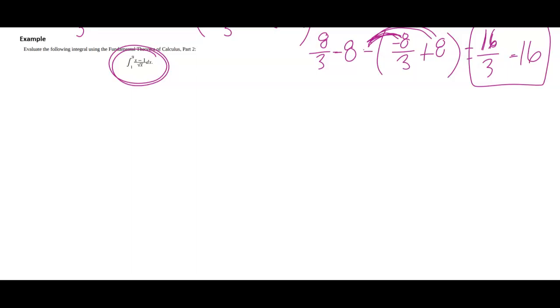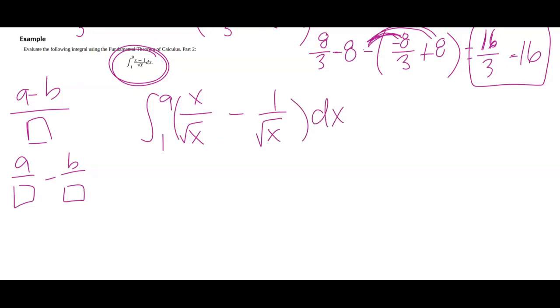But I noticed that I have a polynomial, x minus 1, a linear function which is a polynomial, over the square root of x. And anytime I have like two things, like a minus b or something, over the same denominator, I can split that up as two separate fractions. And that's what I'm going to do here. I'm going to write this as the integral from 9 to 1 of x over the square root of x minus 1 over the square root of x.